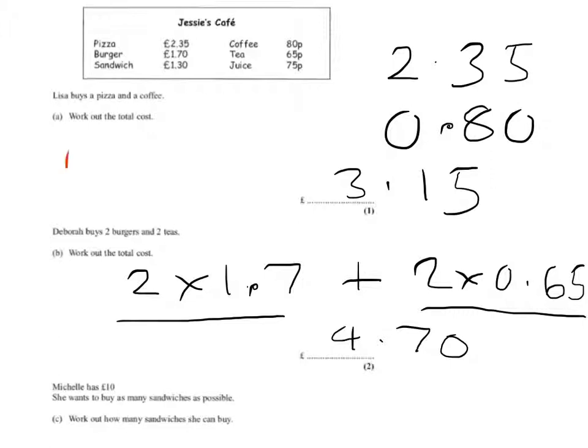So she's got £10. She's got to divide that by the cost of a sandwich which is 1.3. That answer I calculated will come out as 7.69. You mustn't leave it because you cannot buy 0.69 of a sandwich. So your answer will be 7 sandwiches.